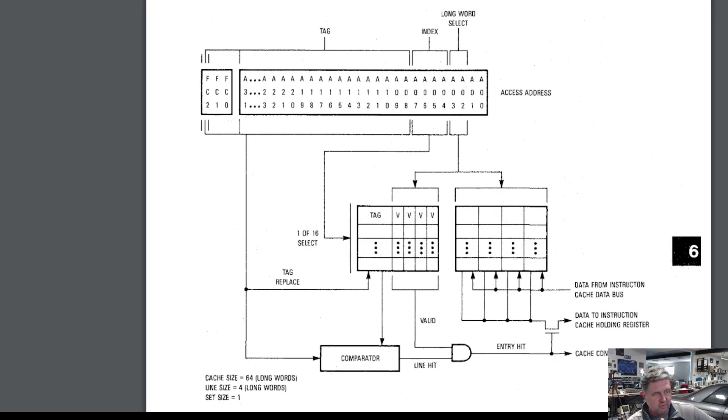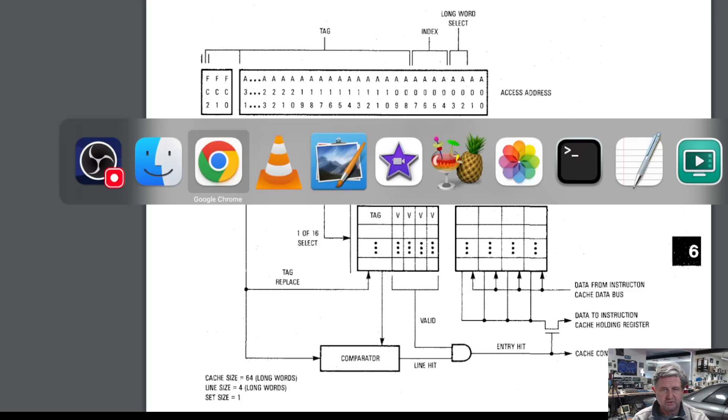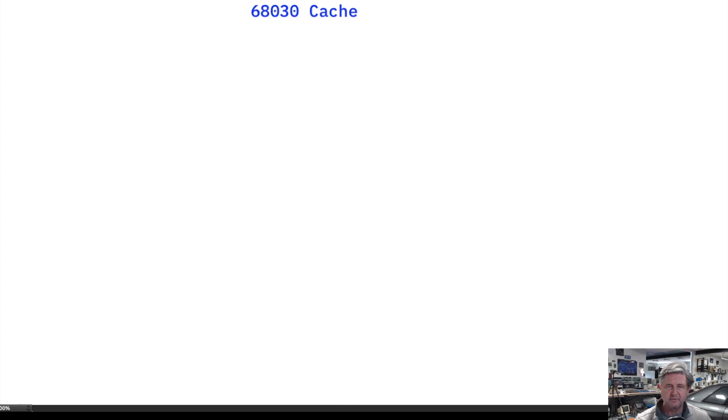The picture here is the one from the datasheet, but I think we're going to switch over to a drawing because it'll be easier to talk through while we're drawing. So the 68030 has two caches: an instruction cache and a data cache, and they're both the same size, 256 bytes.